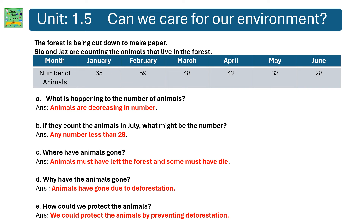What is happening to the number of animals? Animals are decreasing in number. If they count animals in July, what might the number be? Any number less than 28. Where have the animals gone? Animals must have left the forest and some must have died. Why have the animals gone? Animals have gone due to deforestation. How could we protect the animals? We could protect them by preventing deforestation. Deforestation means cutting down of trees.